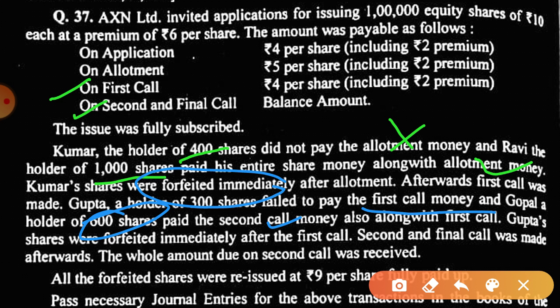After first call, Gupta's shares were forfeited. Kumar's shares were forfeited after allotment, and Gupta's shares were forfeited after first call. Then second call was made. All the forfeited shares were issued at rupees 9 per share fully paid up. We have to pass the journal entries. I hope the question is clear to you.